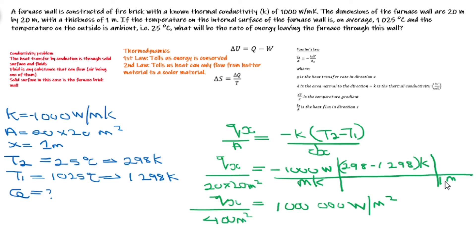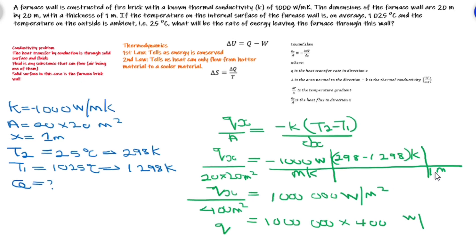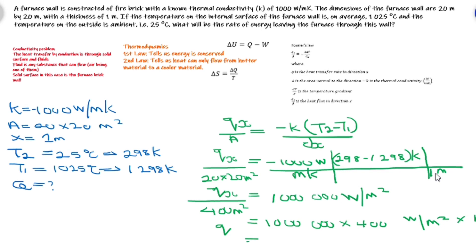If we make Q, subject of the formula, which is our heat, we should have watts per meter squared times meters squared. And this should give us, I'm going to divide by 1000, 400,000 kilowatts.